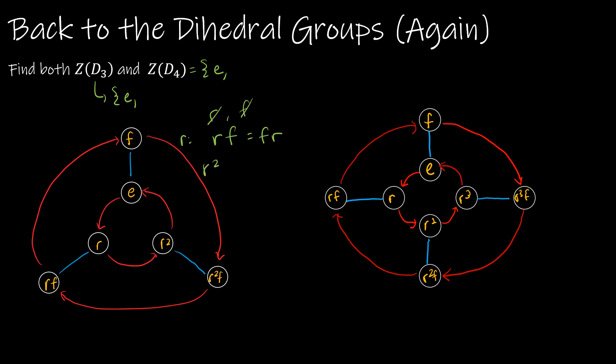Well, let's try R squared. Is R squared F the same as FR squared? So R squared F and then FR squared. Nope, not the case. So again, I've already now shown that R squared is not going to commute with everything. Now, what about the last one that I haven't tried? RF. I believe I've tried the rest of them. So RF. Let me just try and get RF.